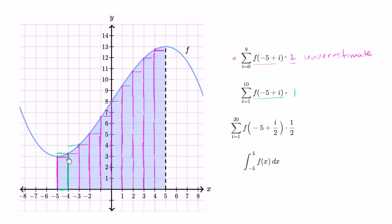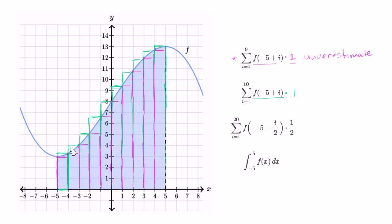So it's going to look something like this — now we're dealing with right-handed rectangles. And these are clearly an overestimate. You're going to go all the way to when i equals ten: negative five plus ten is five, so f of five. That's this length right over here, and of course we're multiplying it by one. So it's going to look like that. These are all right-handed rectangles, and these are going to be an overestimate of the area, because they all have this little extra region right over here. So these are going to be an overestimate.